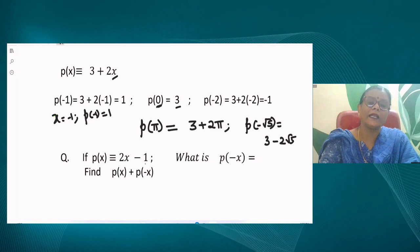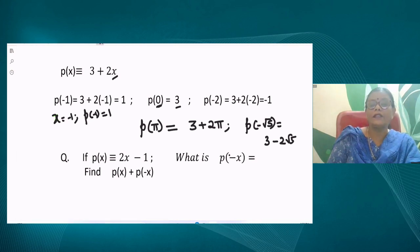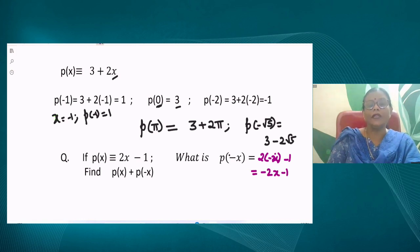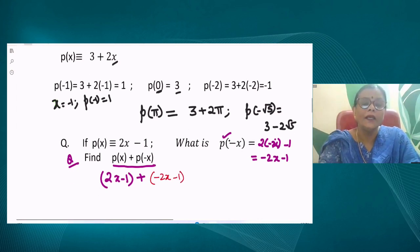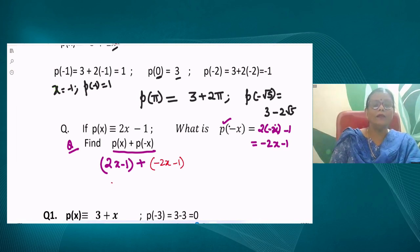Now we move to the next thing. p(x) is 2x - 1. The question is, what is p(-x)? Replace x with -x. You get 2 times -x minus 1. So the answer is -2x - 1. That is the value of p(-x). Now the question is, find p(x) + p(-x). p(x) is 2x - 1 and you add p(-x), which is -2x - 1. When you add these expressions, 2x gets cancelled. What is the answer? Minus 2.